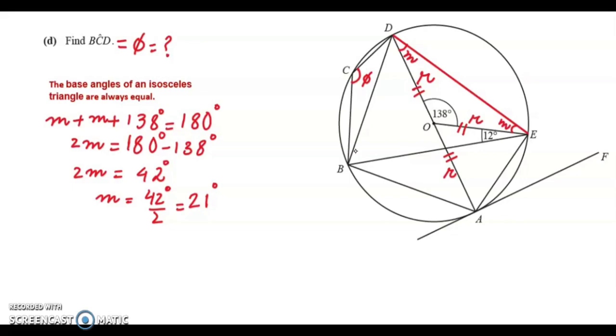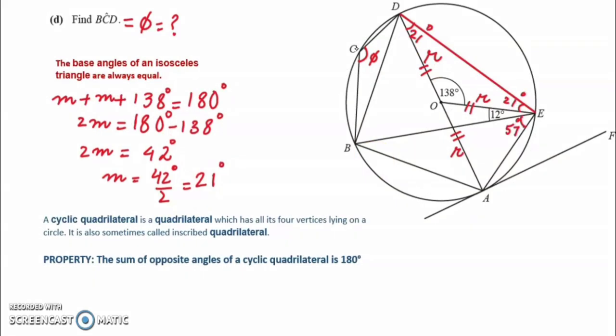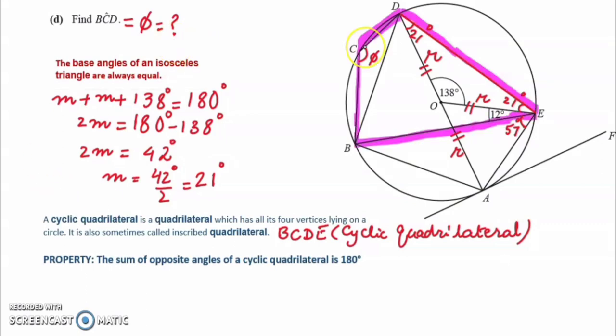Since we need to find angle BCD which is marked by phi, now you should identify that there is a quadrilateral within the circle touching four of its points at the circumference. It is called a cyclic quadrilateral. BCDE is a cyclic quadrilateral. This highlighted quadrilateral is BCDE, cyclic quadrilateral. We have its property that sum of the opposite angles of a cyclic quadrilateral is 180 degrees. Now we can easily find this angle phi because in this cyclic quadrilateral, the opposite angle to phi is 21 plus 12 degrees.